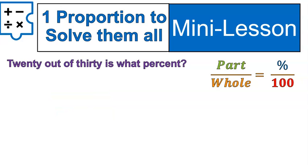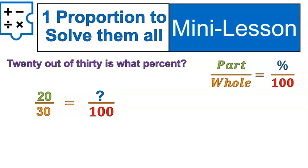Let's try another one. If we're asked '20 out of 30 is what percent?', the 'what percent' means the percent is our unknown value. We don't know what the percent is. What we do know is that it's 20 out of 30, so the other fraction will be 20 out of 30, and then we solve it as a proportion.